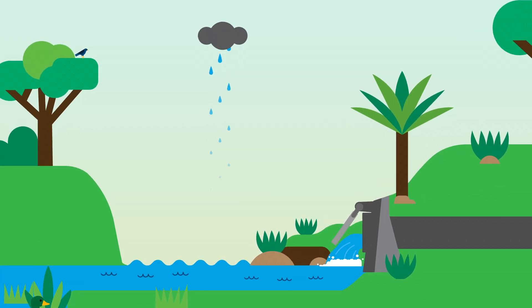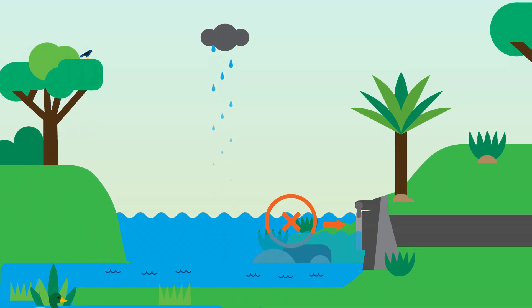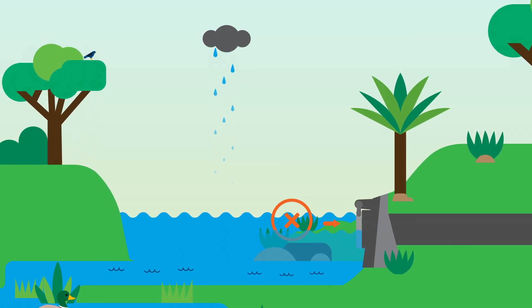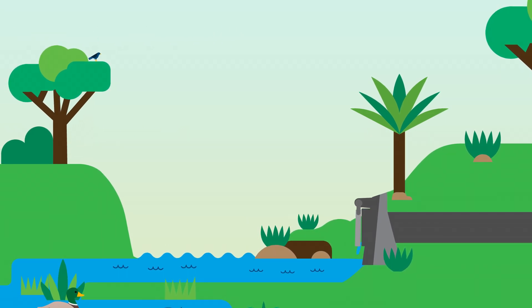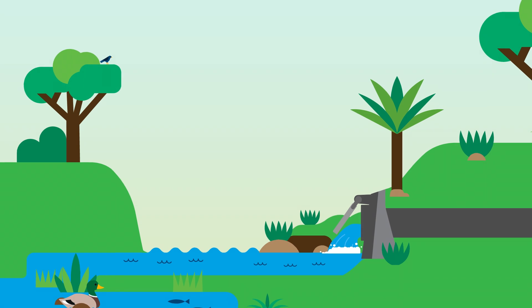For example, in a flooding event, the pressure of the rising water in the river keeps the gate closed so water cannot escape from the river. But once the river level decreases, the gate opens and allows water that has accumulated to flow out and into the river.